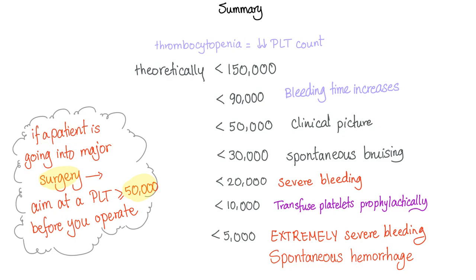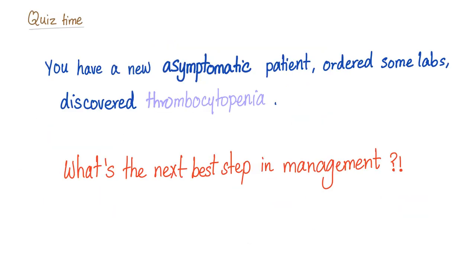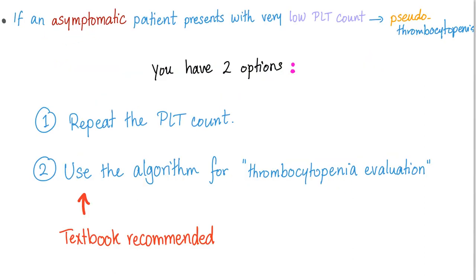If you want to do a major invasive surgery, make sure that the platelet count is 50,000 or more. Now, if you have a new asymptomatic patient — totally fine — you order some labs and discover thrombocytopenia with a very low platelet count. What's the next step in management? First of all, keep in mind: if the patient is asymptomatic and the platelet count is very low, please consider pseudothrombocytopenia.